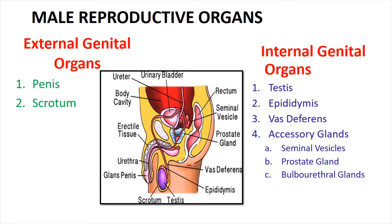The organs which are on the outside of the body are the external genital organs. The organs inside of the body related to reproduction are the internal genital organs. There are two external genital organs: the first one is the penis and the second one is the scrotum.